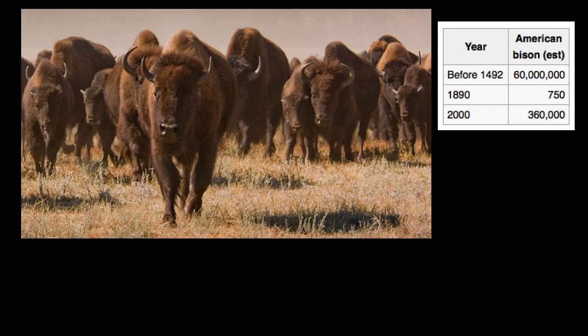And here's a final example. It is generally believed that about 60 million North American bison, commonly known as buffalo, existed in the Great Plains before European settlement. Overhunting by humans reduced that number of buffalo to just 750 by 1890. The population has recovered somewhat after that, and by the year 2000, an estimated 360,000 bison were on the range. However, their genetic diversity is likely to have been significantly reduced from that original population of 60 million, because every single one of those 360,000 bison is a descendant of a much smaller gene pool.